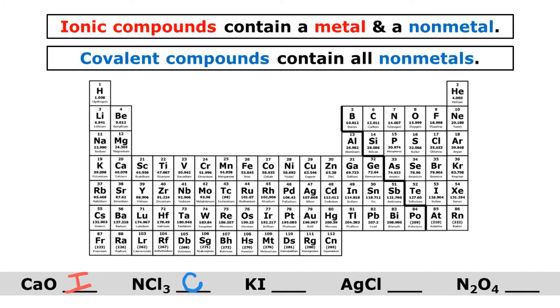Next we have KI, or potassium iodide. So potassium is a metal and iodine is a non-metal. So this is an ionic compound because it contains a metal and a non-metal.